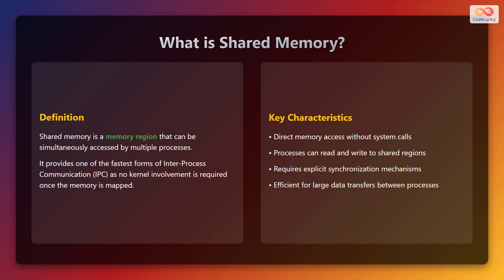What is shared memory? Shared memory is a memory region that can be simultaneously accessed by multiple processes. It provides one of the fastest forms of inter-process communication, also known as IPC, as no kernel involvement is required once the memory is mapped. Key characteristics include: direct memory access without system calls, processes can read and write to shared regions, it requires explicit synchronization mechanisms, and it is efficient for large data transfers between processes.